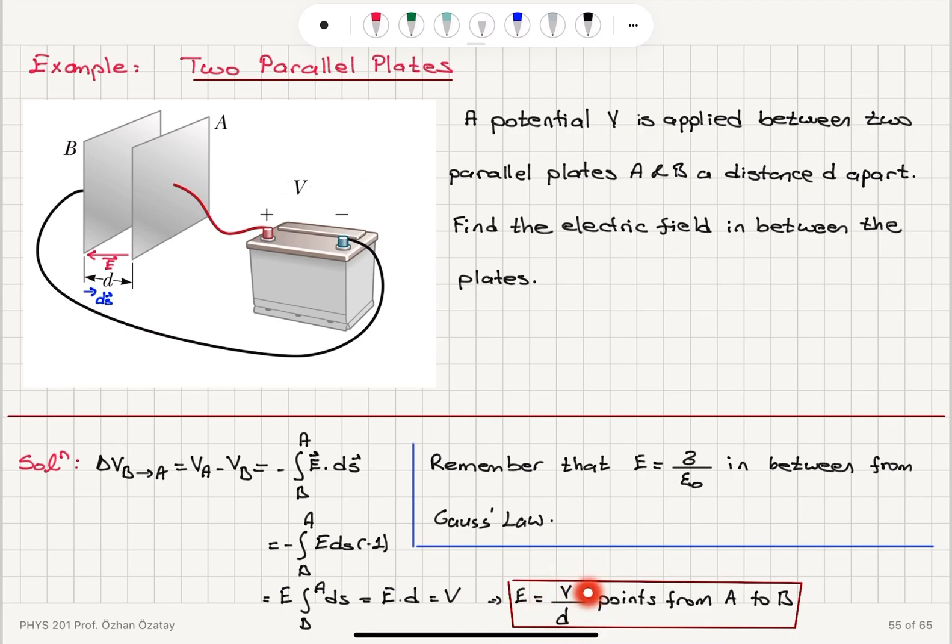So electric field is V over D in magnitude, but it points from A towards B. And I remember that this electric field is actually equal to the surface charge density sigma divided by permittivity of free space in between the plates. This was a result I obtained in the discussion of Gauss' law.